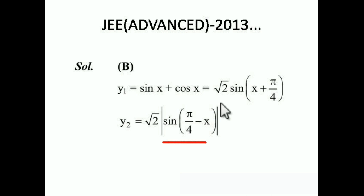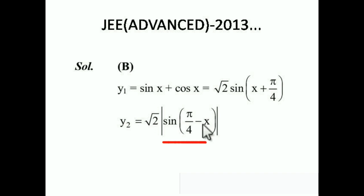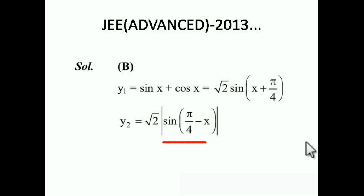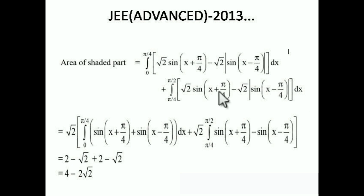The first curve y₁ is the same for both intervals 0 to π/4 and π/4 to π/2. For the second curve: if we put a value between 0 and π/4, the expression sin(π/4 − x) becomes negative, so |sin(π/4 − x)| = −sin(π/4 − x) = sin(x − π/4). In the region greater than π/4, it becomes positive. So we subtract y₁ minus y₂ in each interval separately.